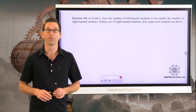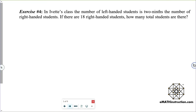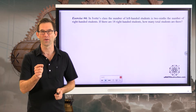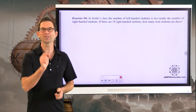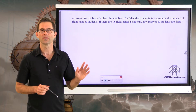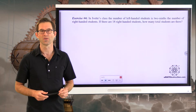Exercise number four. In Yvette's class, the number of left-handed students is two-ninths the number of right-handed students. If there are eighteen right-handed students, how many total students are there? Pause the video and see if you can use what we've been talking about to figure out the answer.